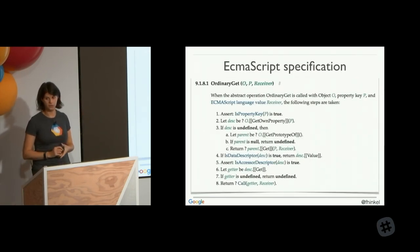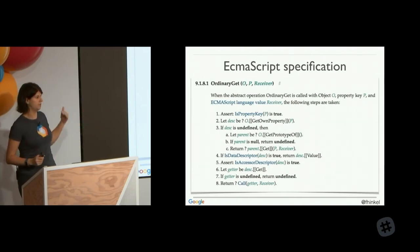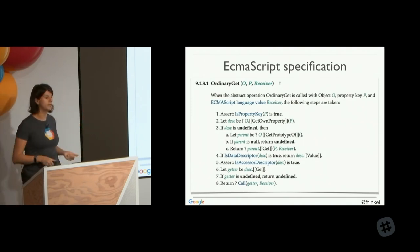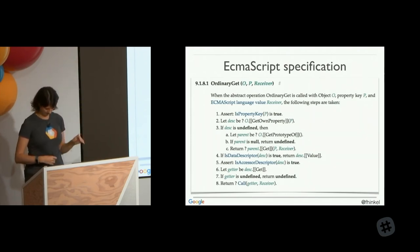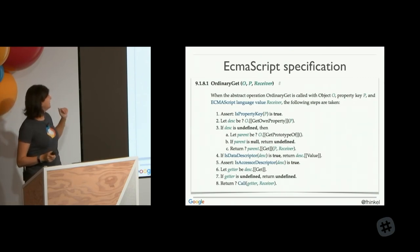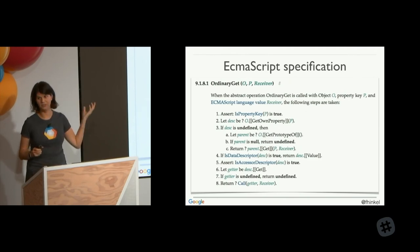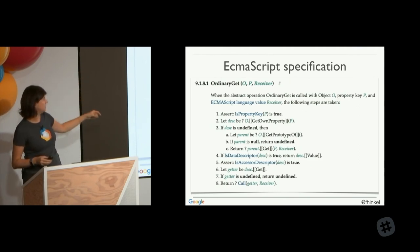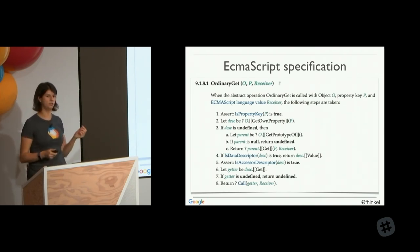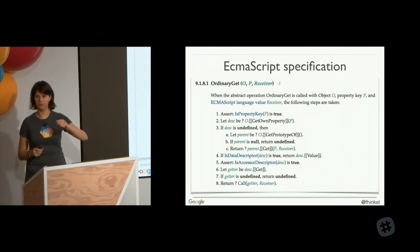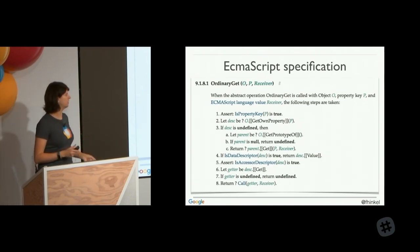In the ECMAScript specification — which specifies how JavaScript must be implemented — just this simple property lookup is eight steps, and each one of those steps is itself another long list of ten steps or so. So everything is really complicated in JavaScript. It's not just 'you get this property and you're done.' There are considerations for undefined, prototype chains, proxies, get traps, and so on.